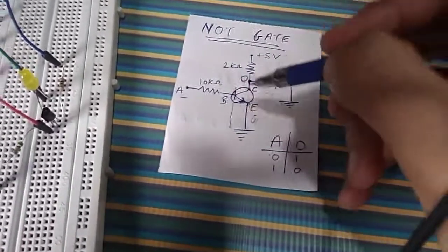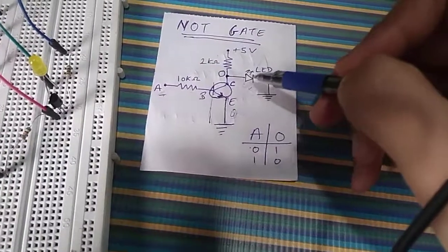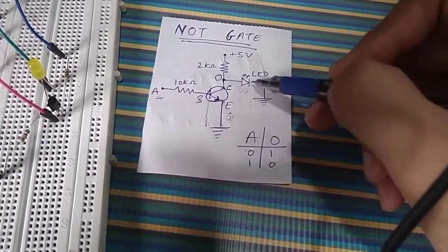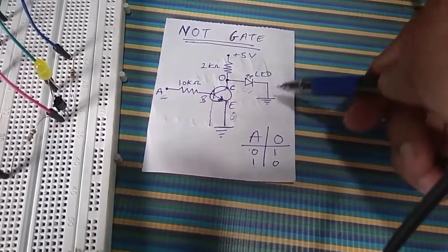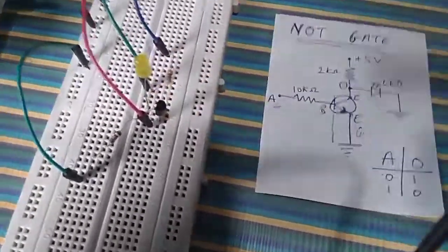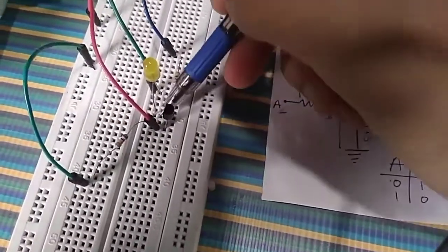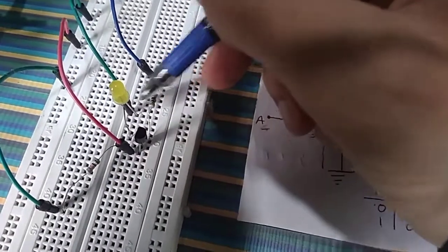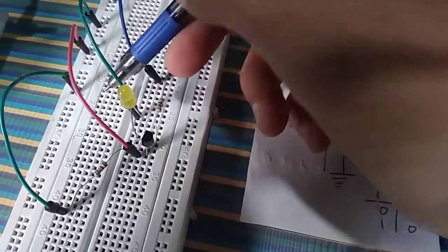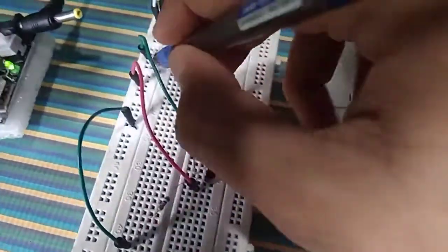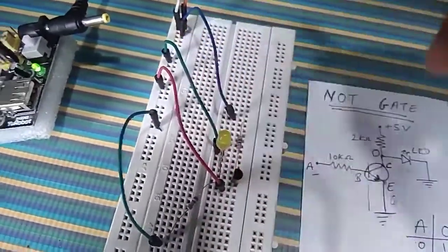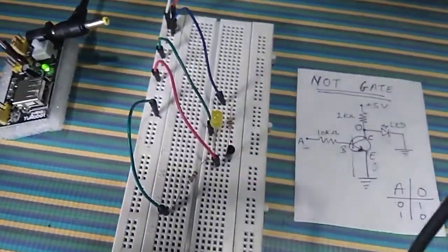This collector is also connected to the output, which is connected to the LED. One pin of the LED is connected to the collector, and the other pin of the LED is connected to the ground. Here you can see the transistor's collector pin is connected to the LED's positive pin, and the negative pin is connected to this green wire going to the negative of the breadboard — that is the ground.